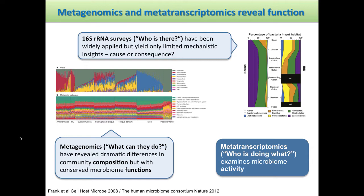So why should we consider metatranscriptomics in our analyses? As Morgan outlined yesterday, there are differences between the various technologies we apply to study microbiomes. We have 16S surveys — these are very informative, they tell us who is there — but they don't give us much in the way of mechanistic insights. This is a study from a colleague at UC Denver from around 2007-2008, looking at patients with IBD versus healthy individuals across different taxonomic groups in the intestine. You can see there are huge differences between IBD patients and healthy patients, but you have no idea if that's cause or consequence.